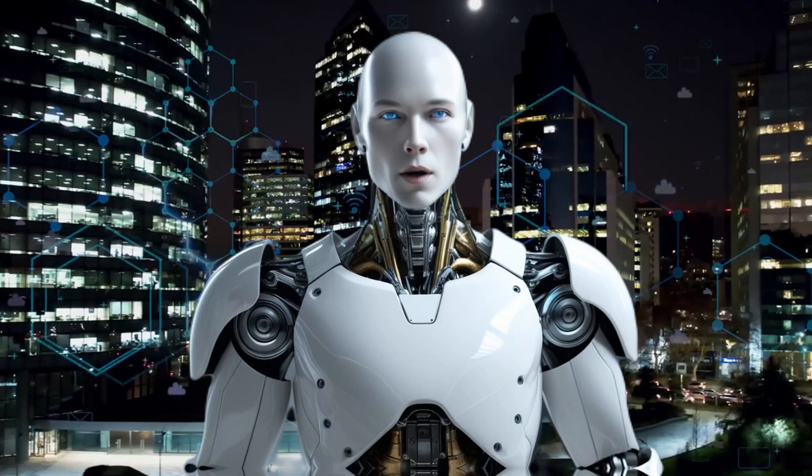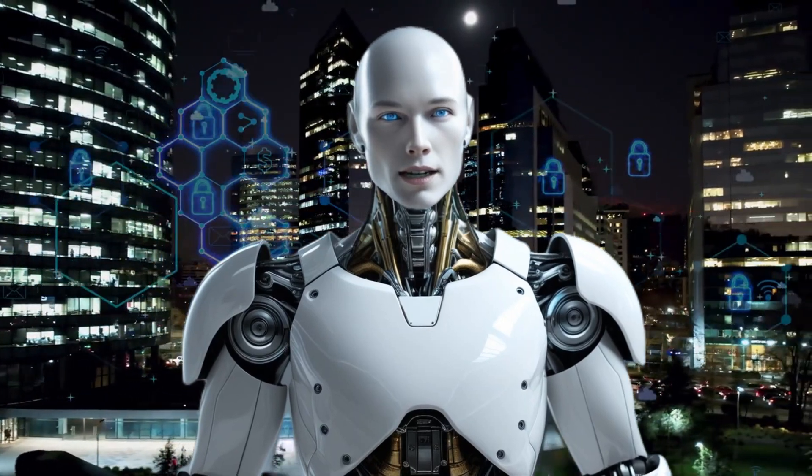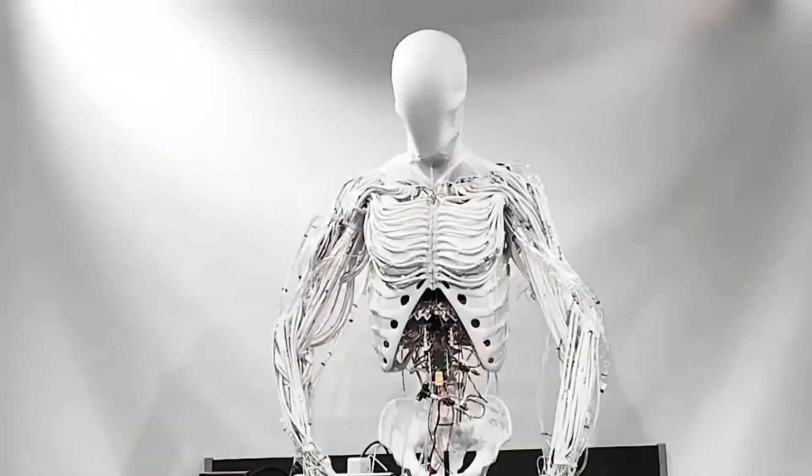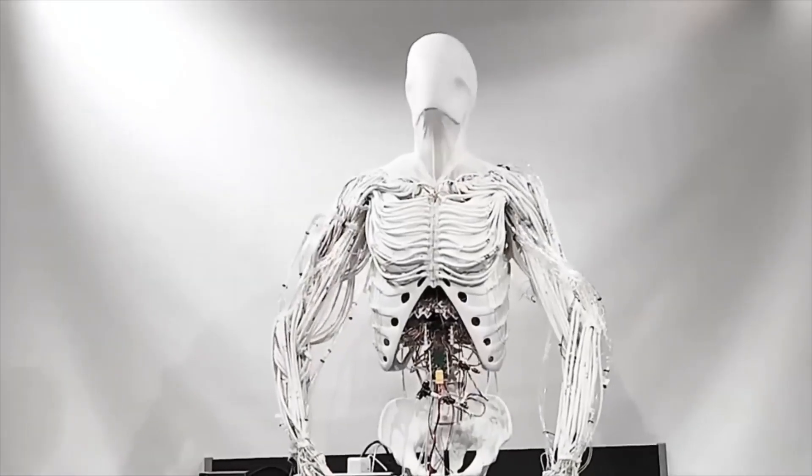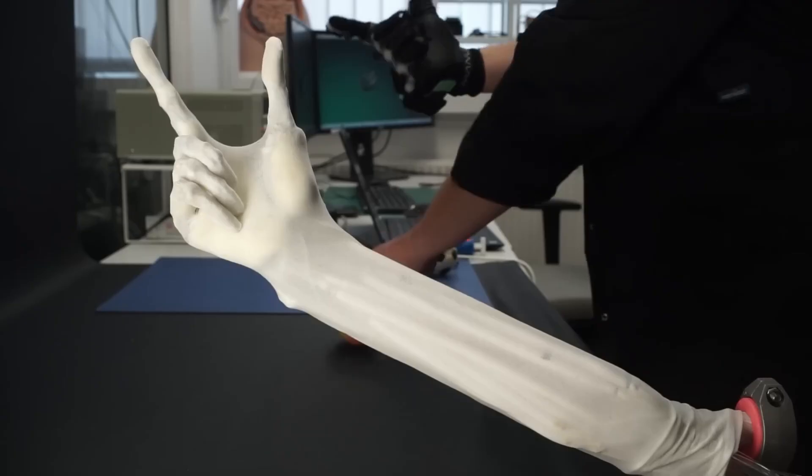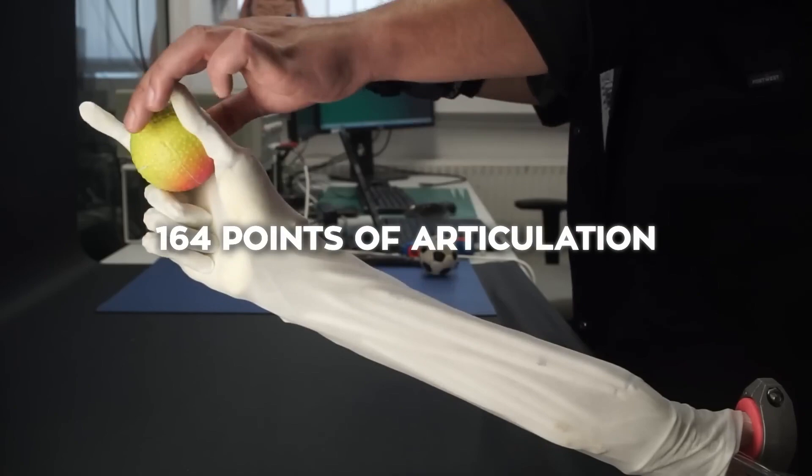This robot has a polymer skeleton that mimics the 206 bones in the human body. It's got articulated joints and artificial ligaments, giving it an incredible range of motion. Its upper body alone has 164 points of articulation.